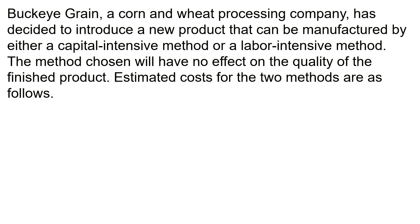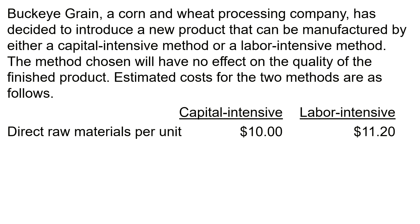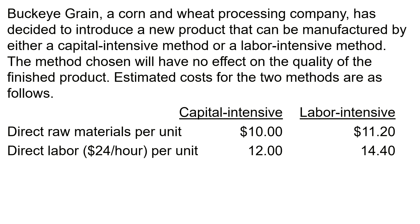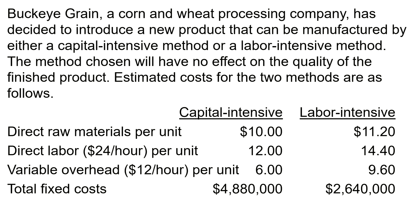Estimated costs for the two methods are as follows. For capital intensive and labor intensive: direct raw materials per unit are $10 for capital intensive and $11.20 for labor intensive; direct labor is $12 for capital intensive and $14.40 for labor intensive; variable overhead at $12 per hour gives $6 per unit for capital intensive and $9.60 for labor intensive. Total fixed costs are $4,880,000 for capital intensive and $2,640,000 for labor intensive. The names are descriptive — there are many more fixed costs for capital intensive, and labor costs are a bit higher for the labor intensive method.